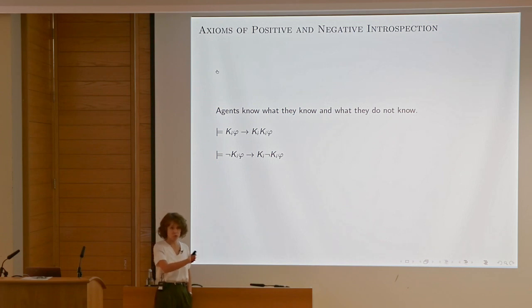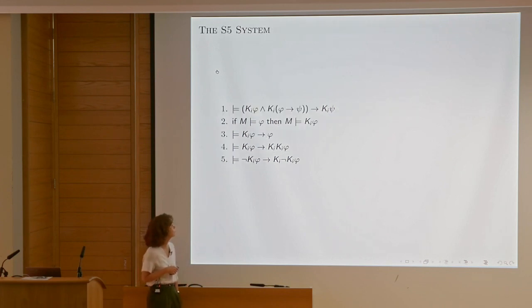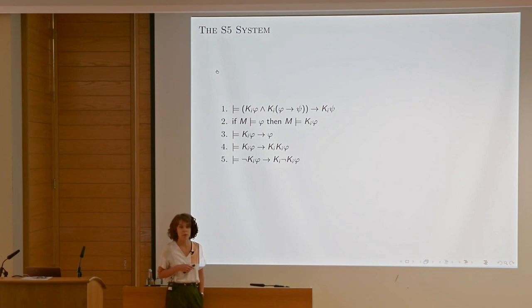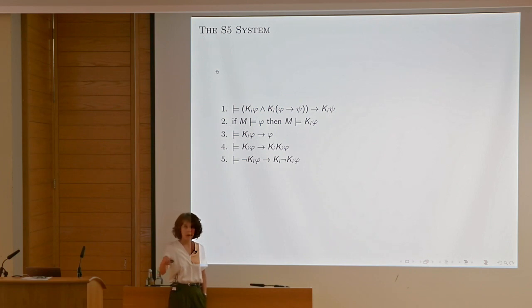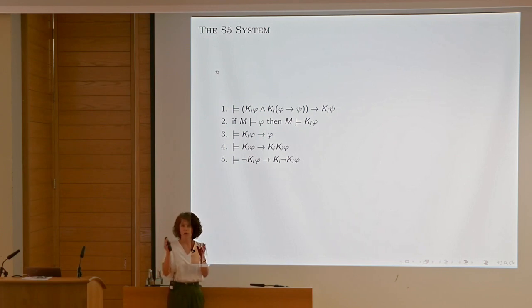These properties can actually be shown on the level of modal logic about this interpretation of knowledge. If we agree on this modeling, we have to accept that these will be true about our knowledge model. This is what we call the S5 system — knowledge interpreted over equivalence relation graphs. This type of knowledge corresponds to full certainty: I'm certain, I know what I know, I know what I don't know, my knowledge is factual.